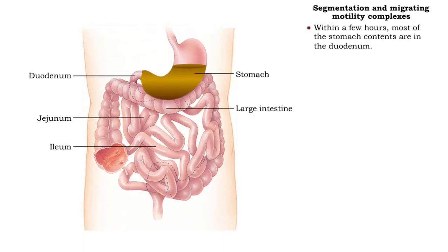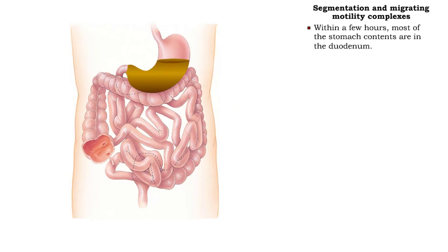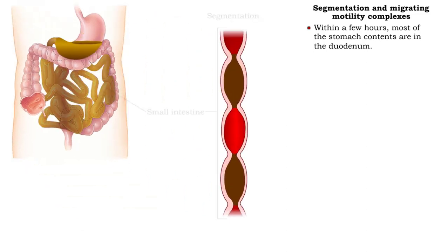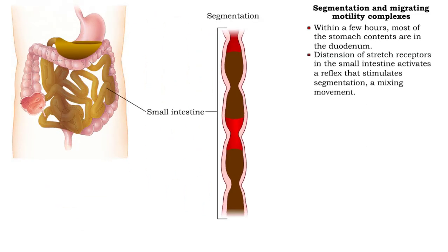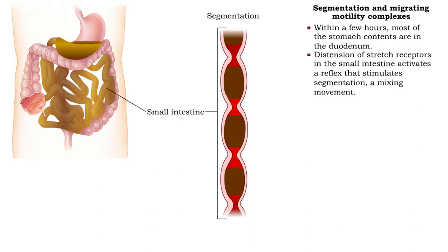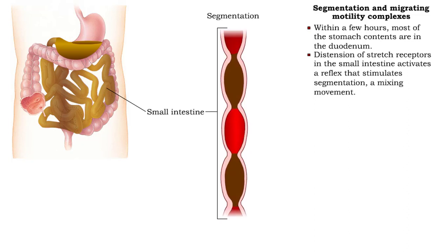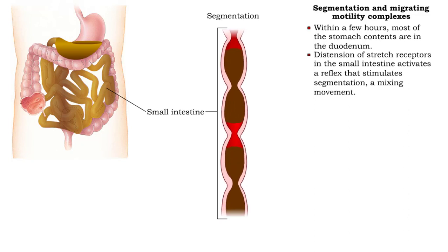Within a few hours, the duodenum contains most of the contents of the stomach. Distention of stretch receptors in the small intestine activates a reflex, stimulating a mixing movement called segmentation.